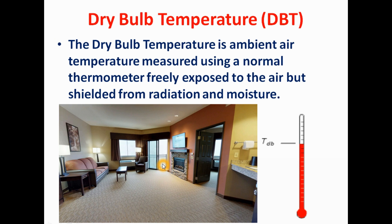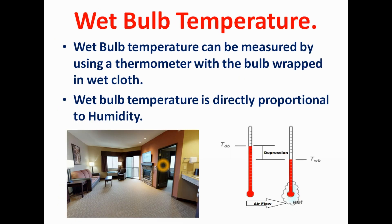Now we'll see what is wet bulb temperature. Wet bulb temperature is also a very simple concept. Suppose we wrap the bulb of this thermometer with a wet cloth and then measure the temperature of the area or surrounding — we call that temperature the wet bulb temperature. This wet bulb temperature is always less than the dry bulb temperature.